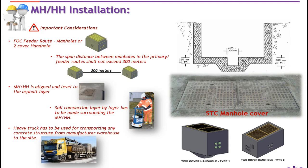Number eight: after mini manhole or handhole is installed, the contractor shall ensure that the level of the installed mini manhole or handhole is aligned and leveled to the asphalt layer. Number nine: gravel bed has to be applied before manhole or handhole installation. The thickness of the gravel bed shall be minimum 15 cm. The gravel bed shall extend 20 cm to 30 cm outside the edges of the mini manhole or handhole.